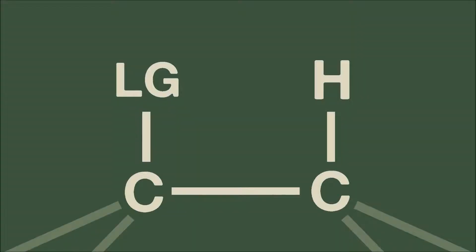In an elimination reaction, the double bond forms between the carbon with the leaving group, called the alpha position, and an adjacent carbon with an acidic hydrogen, the beta position.